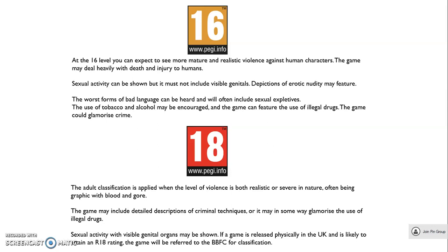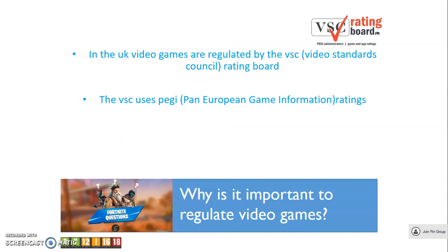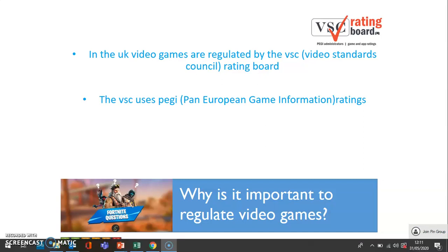Those are your PEGI ratings — basically the age ratings that you might see on a game. Who decides what rating a game gets? In the UK, video games are regulated by the VSC, which is the Video Standards Council Rating Board. The VSC decides what rating a game will get, and they use PEGI ratings — Pan-European Game Information — which developers then have to put on their box. Please pause the video, jot those two notes down, and also have a quick think about the question: why is it important to regulate video games?